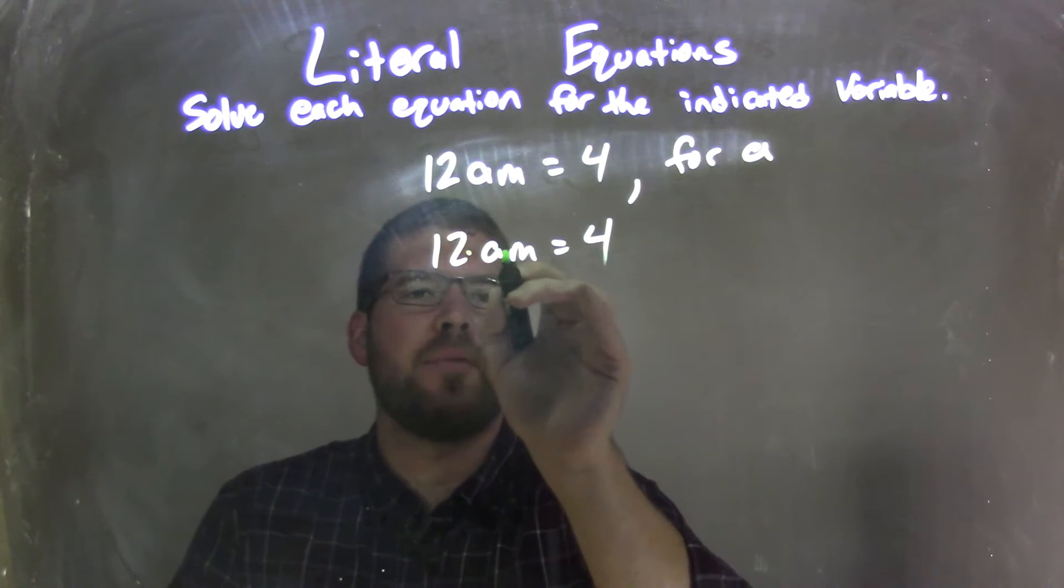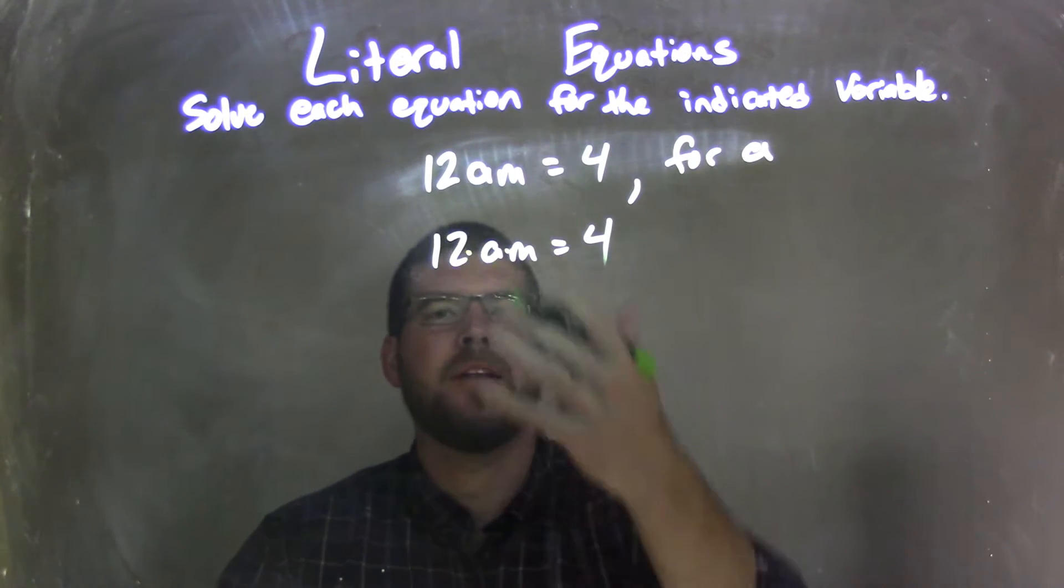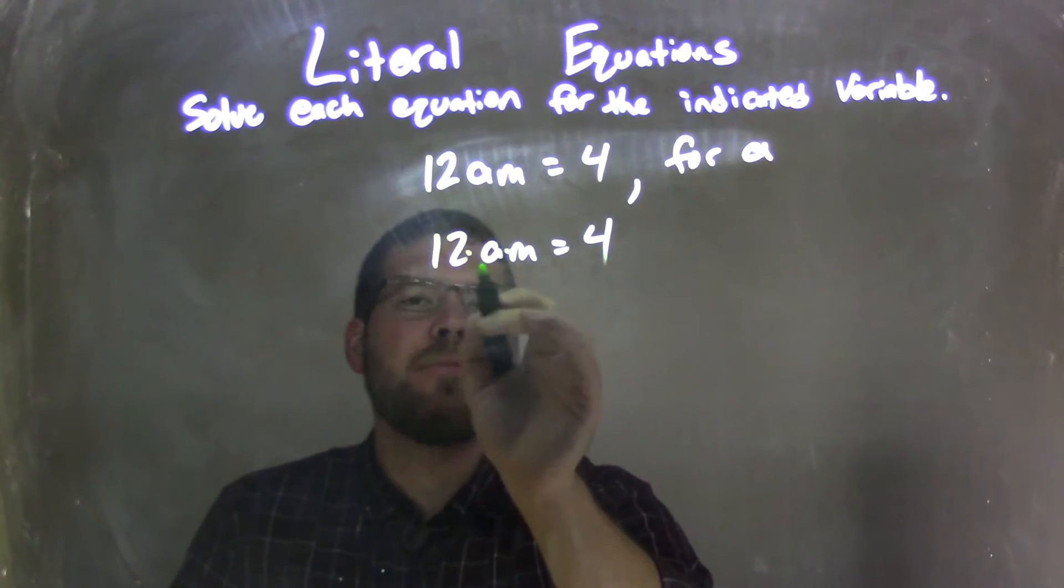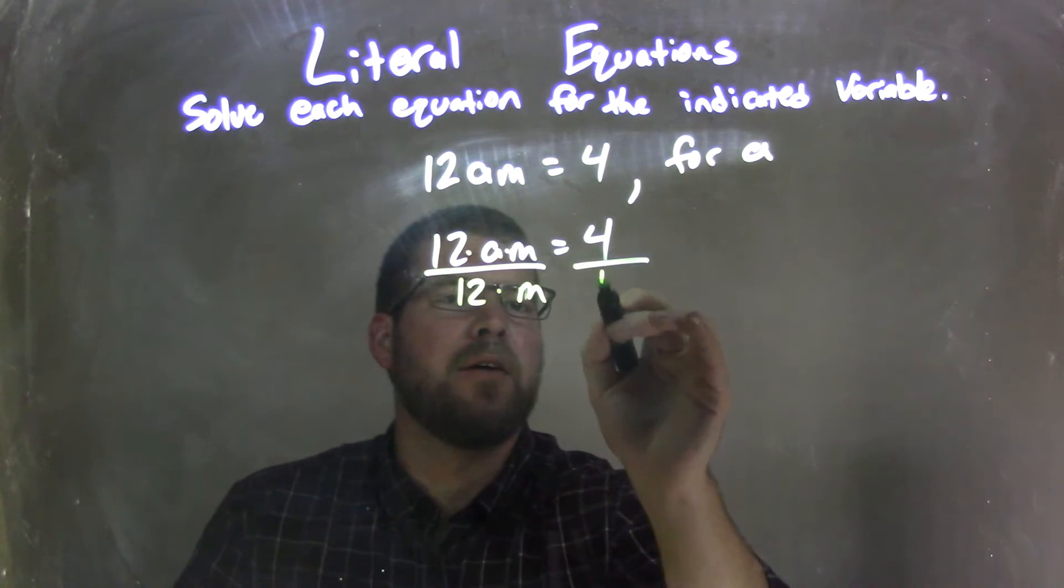Well, there's multiplication going on between the 12, the A, and the M. To get an A by itself, I'm going to divide the other parts, right? Opposite of multiplication is division. So actually, I'm going to divide by 12 and the M to both sides.